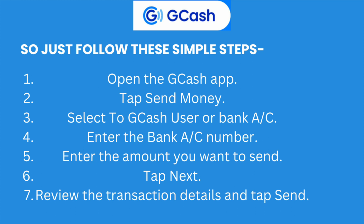Select the bank account to which you want to transfer the money, and enter your own bank account number. Then enter the amount you want to send and tap on Next. Review the transaction details and then tap on Send. This is how you will be able to transfer the money from your GCash account to your bank account. After that, transfer that money from your bank account to your Cash App account.